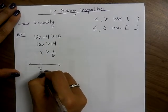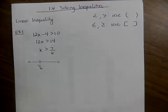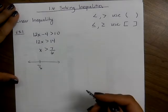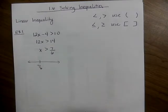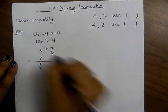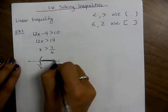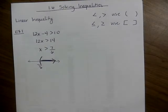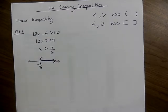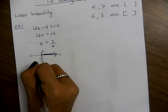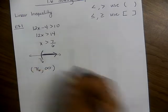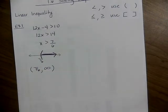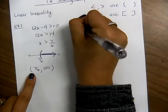Thinking about the number line, if we think about where 7/6 is, then x is greater than 7/6, so normally you'd put an open circle there. Instead of the open circle, we're going to use a parenthesis. All solutions go towards positive infinity, so our final answer is (7/6, ∞). This is saying x is greater than 7/6 — you know it's not equal to because there's a parenthesis, not a bracket.